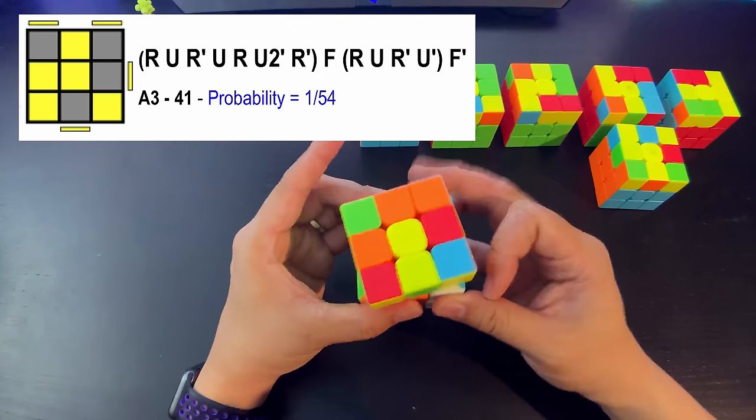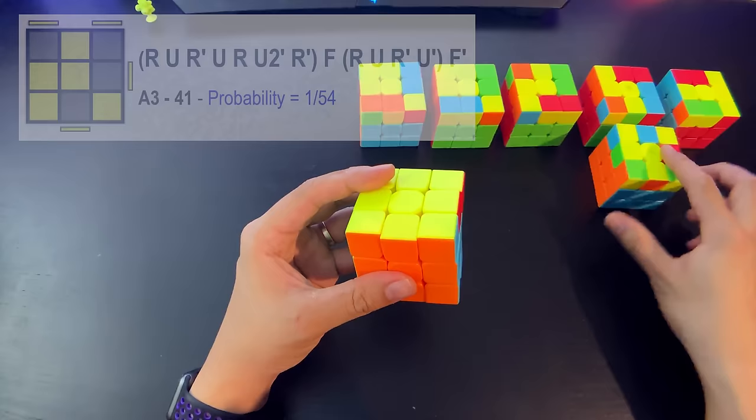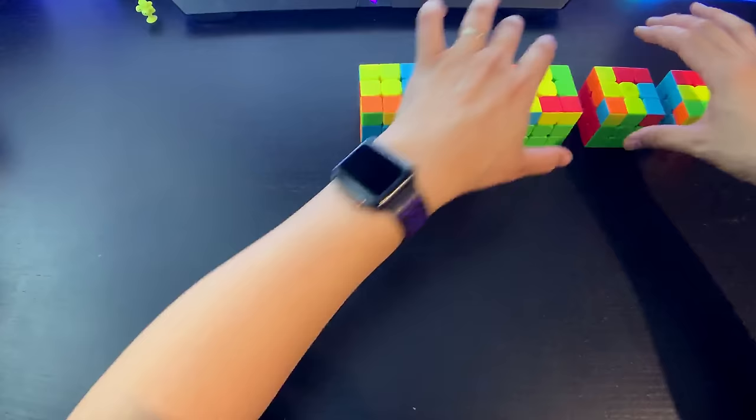So when the headlights are pointing forward to the awkward shape, it is a sune and then the T OLL, which is just front sexy front prime. And when the headlights are pointing backwards, it's an anti-sune and then same T OLL, which is also very easy.